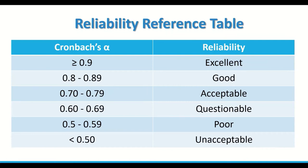A reliability reference table shows Cronbach's alpha values ranging from 0 to 1 along with the corresponding reliability level for each value range.